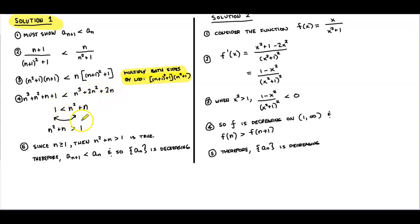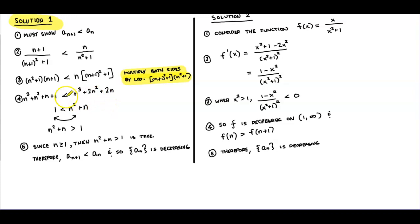Our goal now is to combine all the n terms on one side of the inequality and any constants on the other side. Subtracting n³, n², and n to the right side and leaving the constant 1 on the left, we end up with 1 < n² + n.